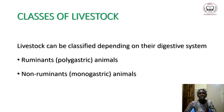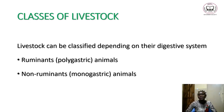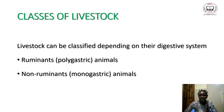There are different classes of livestock. We can classify livestock depending on their origin, depending on what they feed on, or depending on their digestive system. Depending on their origin we may have two main classes: indigenous as well as exotic. Depending on what they feed on we may have herbivores, carnivores, and omnivores.